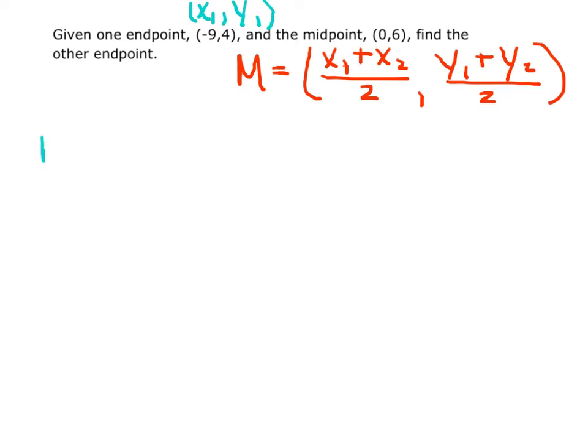If we plug that into our midpoint formula, we have negative 9 plus our x sub 2 that we do not know yet, all divided by 2, and y sub 1 is 4 plus y sub 2 that we still have to solve for, all divided by 2.